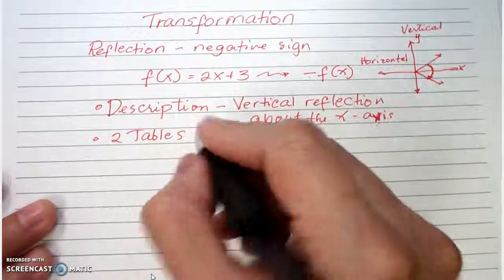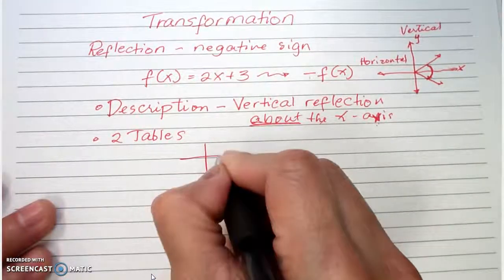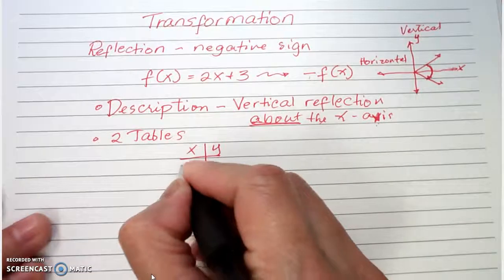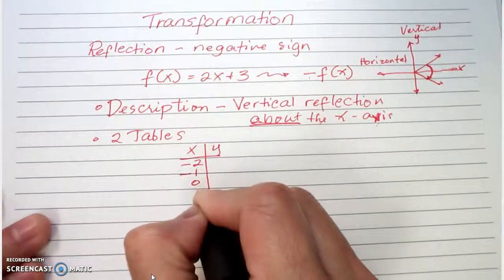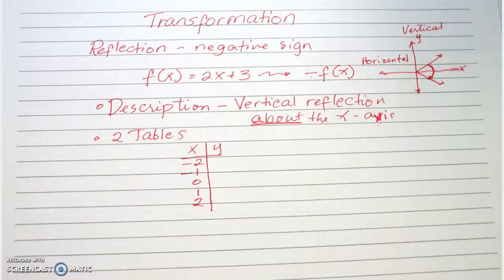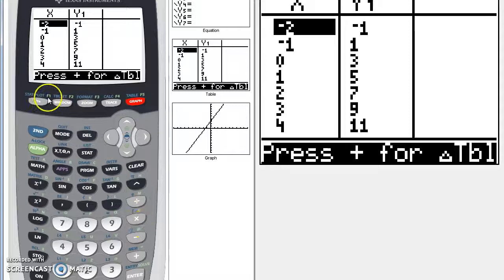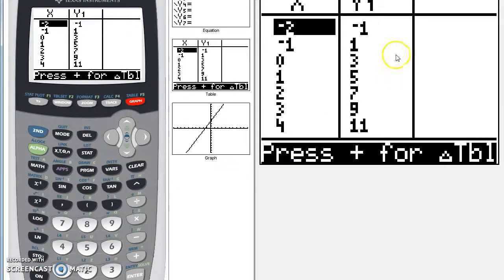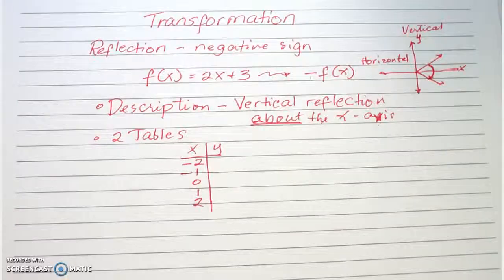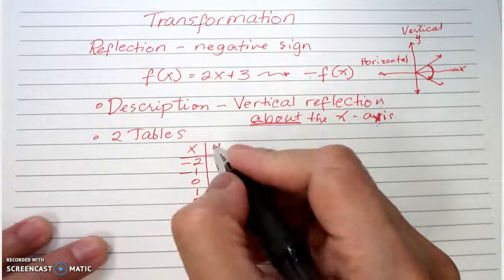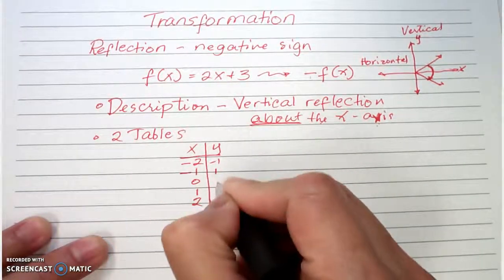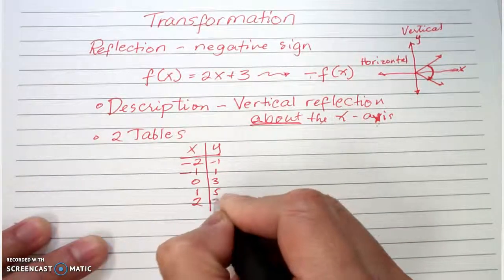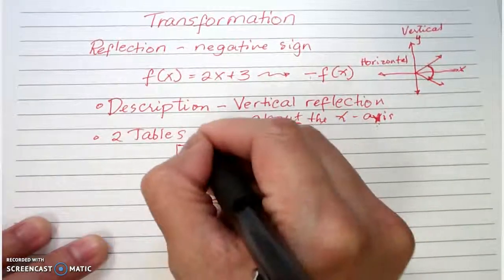The next requirement is two tables. The first table is the original function. You have your x and y, and we assign the domain as negative two, negative one, zero, one, two. Go to your calculator, press Y= and enter the function, then go to Second Graph to get the table. The y-values, or range, will be negative one, one, three, five, and seven. This is your original table.